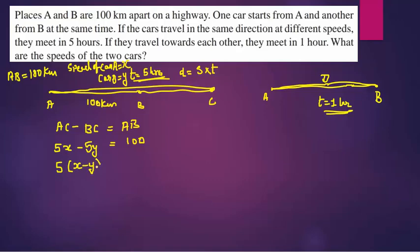5 common. x minus y equals 100. Divide by 5, you get x minus y equals 100 divided by 5, which gives you 20. So this is equation 1: x minus y equals 20.